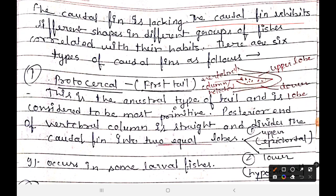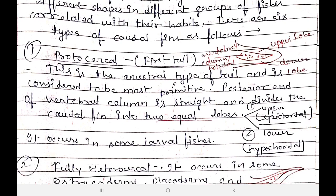The caudal fin exhibits different shapes in different groups of fishes, correlated with their habits. There are six types of caudal fins. Many fishes have specialized, modified types of caudal fins. The first type is protocercal, which is considered the ancestral or most primitive type of tail.